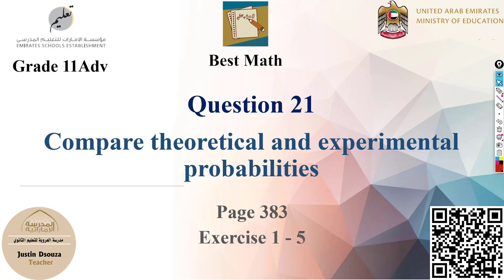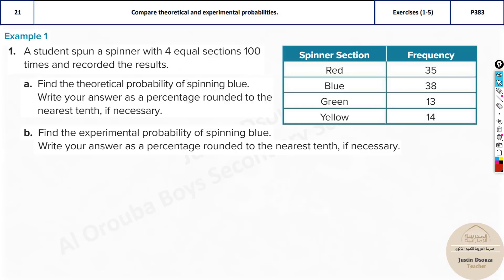We are now in question 21. It is to compare theoretical and experimental probabilities. Let's look into the first problem.